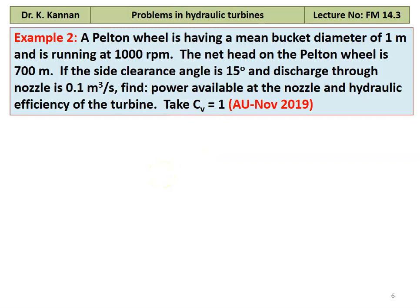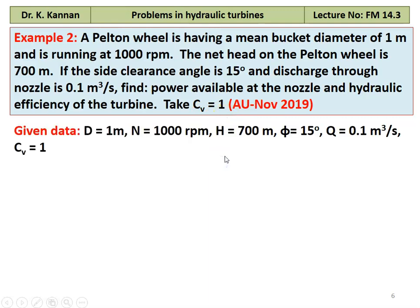Example number 2 from November 2019 question paper: A Pelton wheel has a mean bucket diameter of 1 m running at 1000 RPM. Net head is 700 m. Side clearance angle φ = 15°, discharge through nozzle = 0.1 m³/s, Cv = 1. Find the power available at the nozzle and hydraulic efficiency. Given: D = 1 m, N = 1000 RPM, H = 700 m, φ = 15°, Q = 0.1 m³/s, Cv = 1.